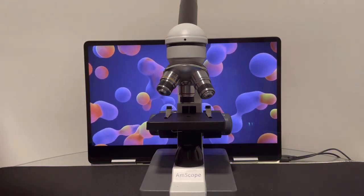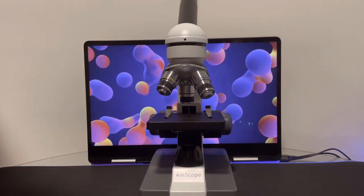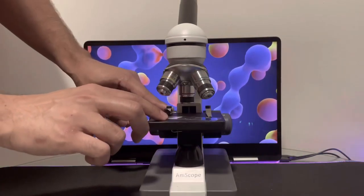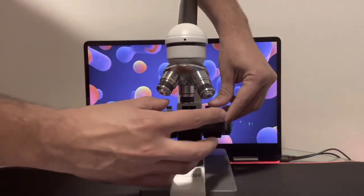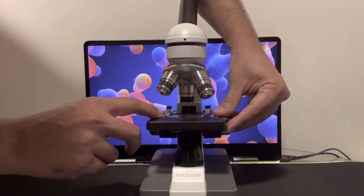Then, you are going to want to place the specimen on a slide. And you could secure the specimen with a small glass cover slip. This slide is placed on top of the stage and underneath the two stage clips.